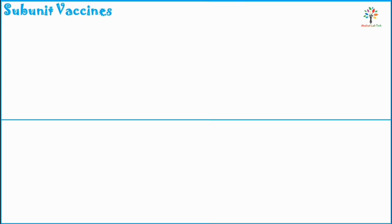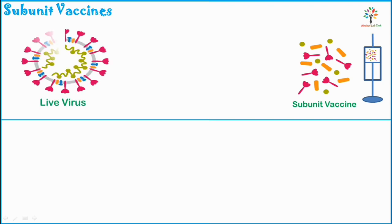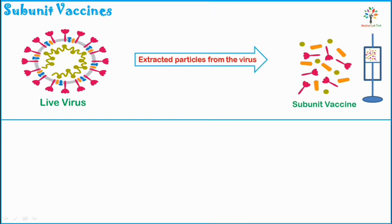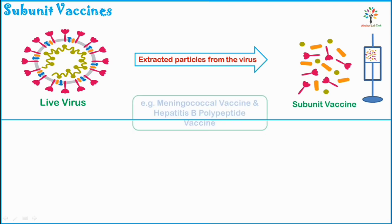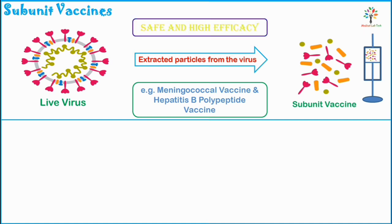Next are subunit vaccines. Subunit vaccines contain only a part of the organism — virus or bacteria — instead of the whole pathogen. They contain extracted particles from the virus or bacteria. Examples include the meningococcal vaccine, formed from the polysaccharide antigen of the cell wall, and the Hepatitis B polypeptide vaccine. Subunit vaccines are safe and have a very high efficacy rate.